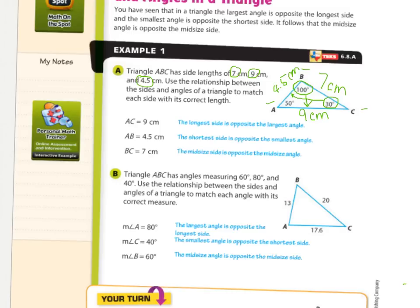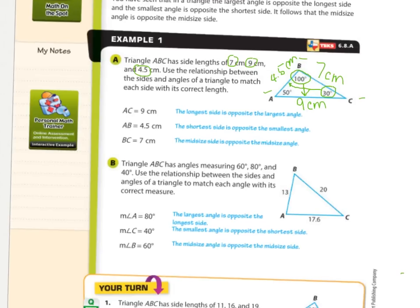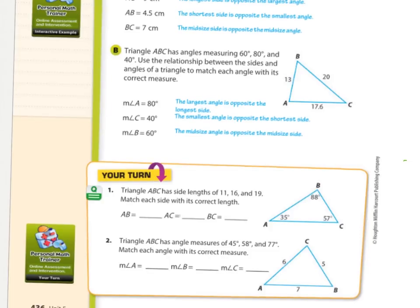Now we're going backwards on part B. Triangle ABC has angles measuring 60, 80, and 40 degrees. Use the relationship between sides and angles to match each angle with its correct measure. The longest length is 20 units — across from it is the biggest angle, which is 80. The smallest side is 13, so it gets the smallest angle measurement, which is 40. The one in the middle is 60.